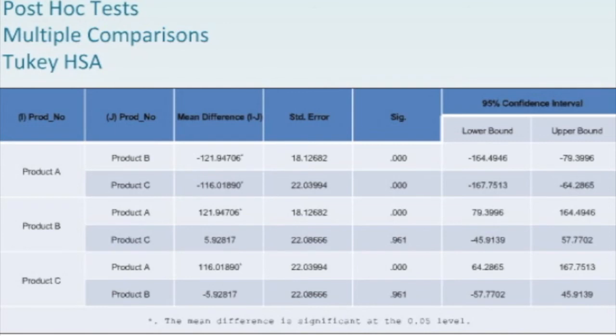But when we look at product B compared to product C, now this is newer for us. We see that the mean difference is only 5.9, standard error is 22, and the SIG value is .961. So we know that it's not statistically significant, and this is also reflected in the confidence interval of the difference, ranging from negative 45.91 to 57.77. So the value of zero is included in the confidence interval of the mean difference. So we know that there is no difference between B and C.